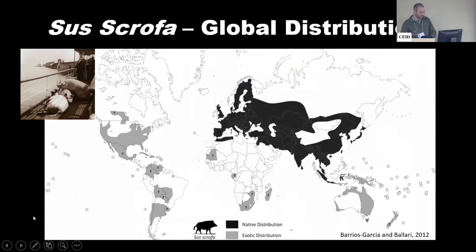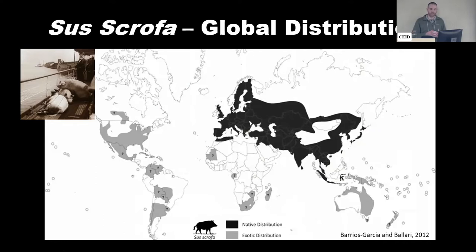This is a globally distributed species. In their native range — shown in dark black — they span from northern Africa across all of Eurasia. If you're familiar with geography, you can see the species adapted to a wide range of environments, which will come into play later. Today, through many different reasons, mainly anthropogenic movements, they're found on six out of the seven continents — everywhere except Antarctica.